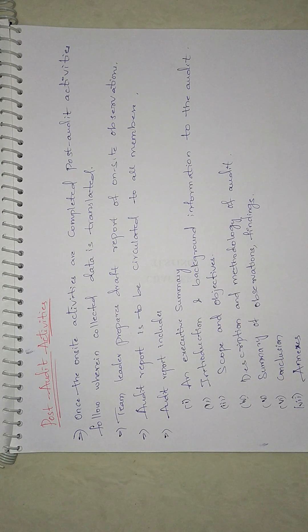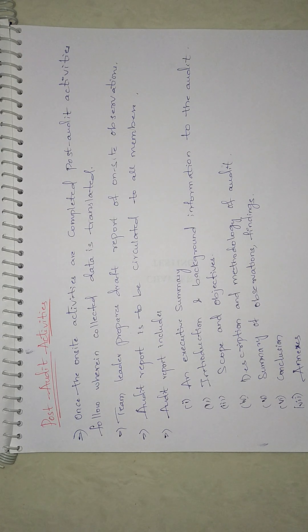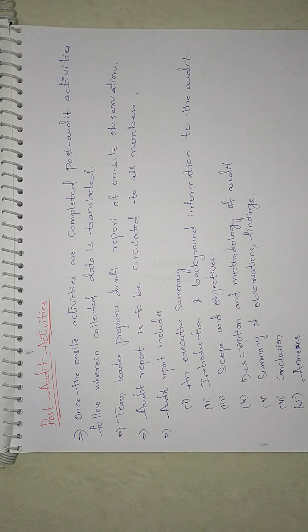This step is followed by a review of the report by the environmental department, law department, and other departments. The final report is prepared by the same audit team with help from other specialists. It will contain statements, facts, and proposals on how to improve environmental performance, improvements in education or awareness raising. The audit report is then circulated to all eight members of the audit team, management committees, and senior site auditors.